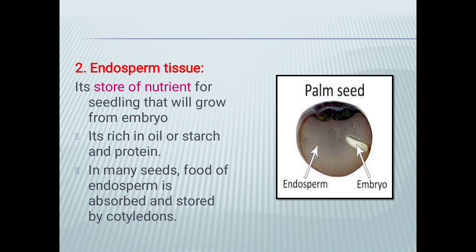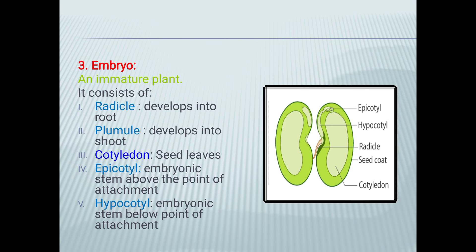Endosperm tissue is the store of nutrients for the seedling that will grow from the embryo. It is rich in oil, or starch, and protein. In many seeds, food of the endosperm is absorbed and stored by cotyledons.